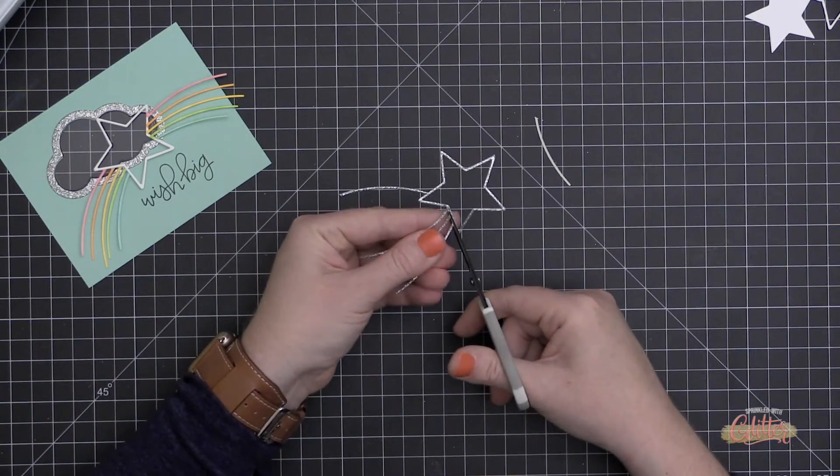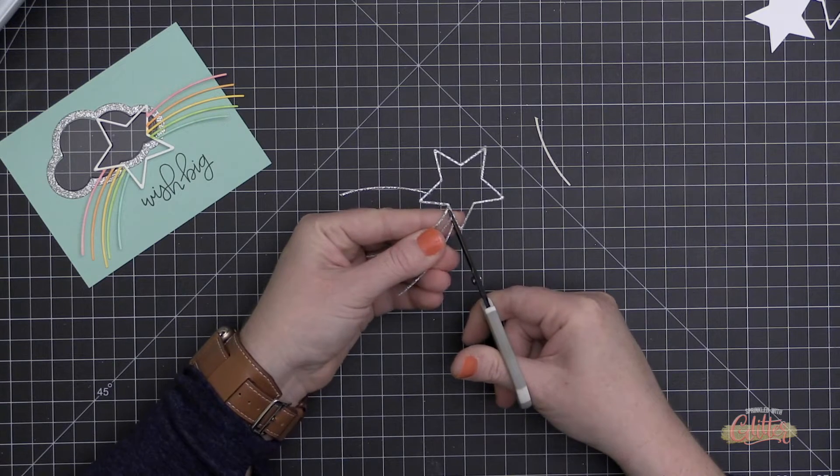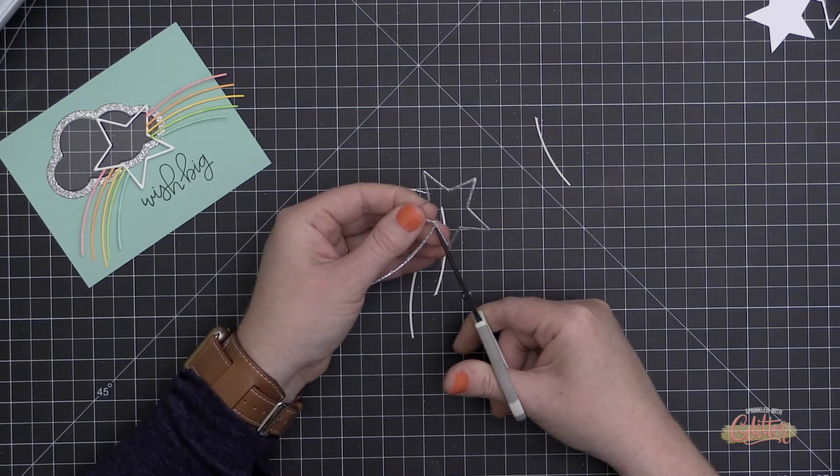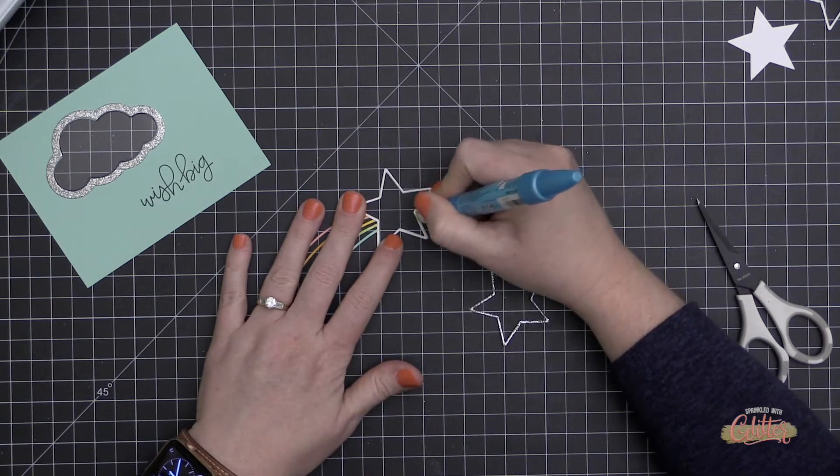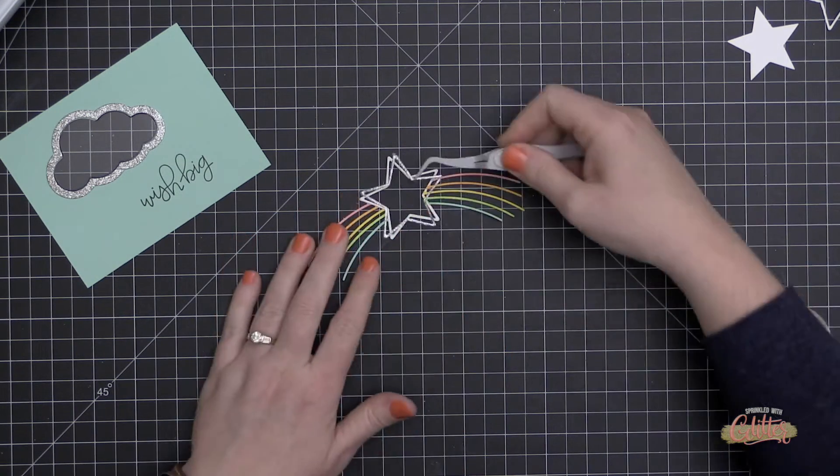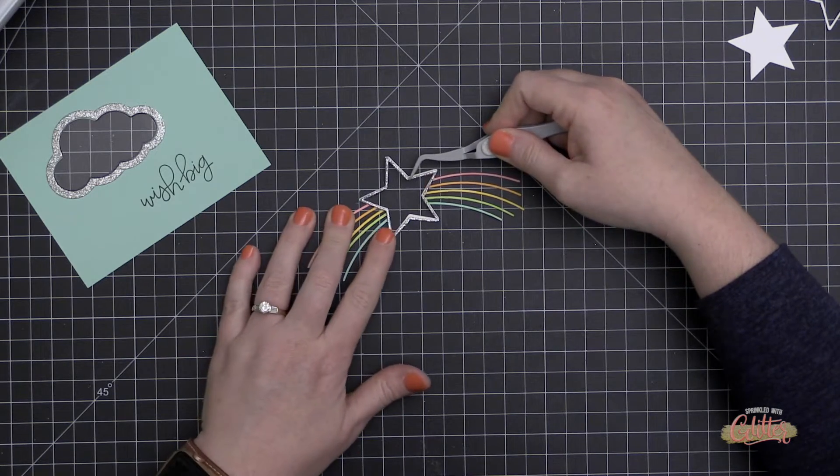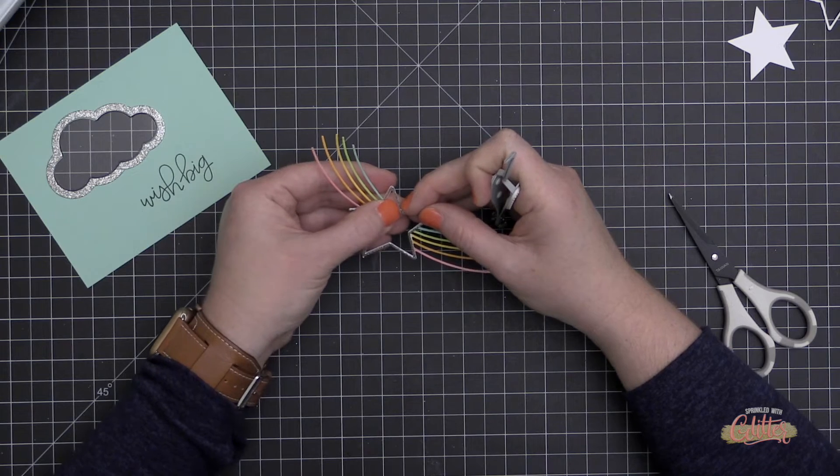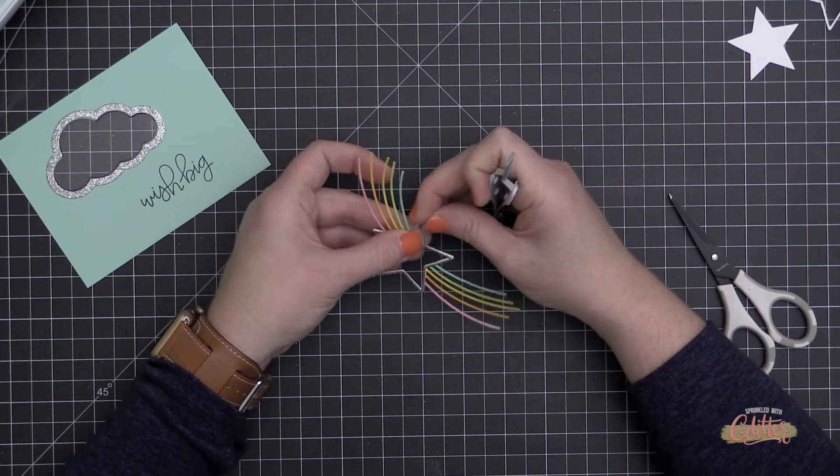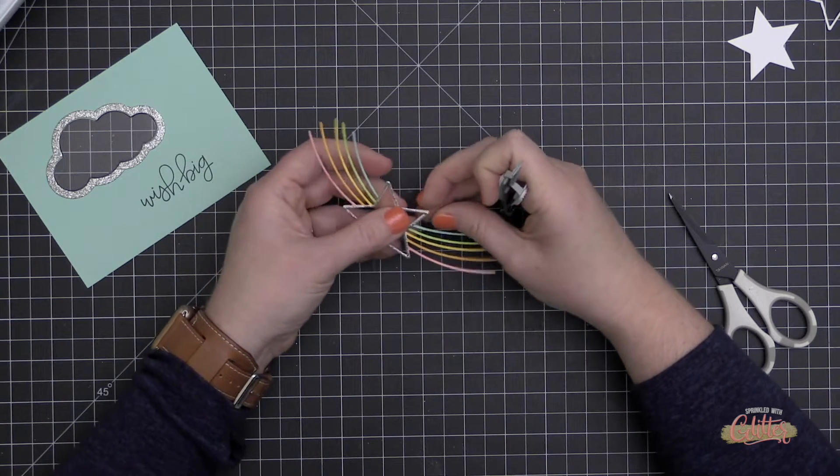Then I cut another one from some silver glitter cardstock, and I'm going to trim off those little trailings there. I'm just going to use the star over the center star on the ones that I stacked up. So in the middle there are actually three stars that are stacked up, giving it a tiny bit of dimension but not too much. You can see that allows me to have that silver star in the middle with those really cool rainbow trailings coming off.